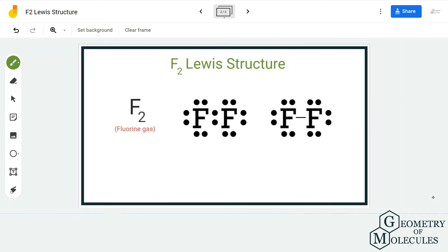Now doing that, we will have eight valence electrons for each fluorine atom. So if you count individually, this fluorine atom has eight valence electrons and this one also has eight valence electrons, and both have complete octets.